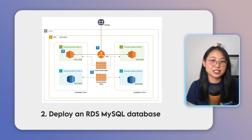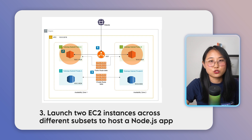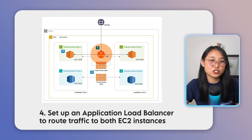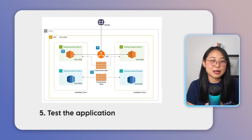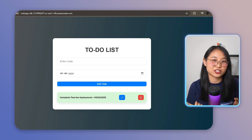Next, deploy an RDS MySQL database — this is where you can run SQL commands and create a table. After that, launch two EC2 instances across different subnets to host a Node.js app. Once that's done, set up an application load balancer to route traffic to both EC2 instances. You'll also need to update security groups so that the ALB can communicate with the app servers. And finally, test the application to make sure it's working and accessible. By the end, you'll have a scalable and production-style web app deployed on a two-tier architecture.